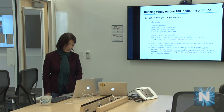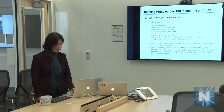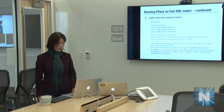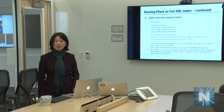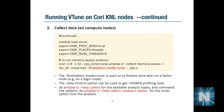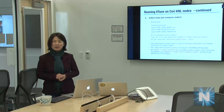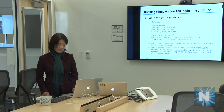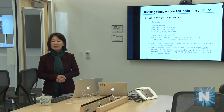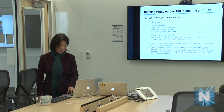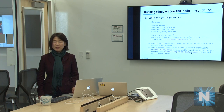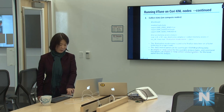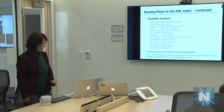To see help information and the available analysis types, you can type amplxe-cl --help --collect. This shows all options of the command-line interface and the analysis types available. Each analysis type also has further knob options to fine-tune what data you collect. For example, typing amplxe-cl --help --collect memory-access shows all available knob options for the memory analysis experiment.